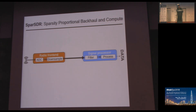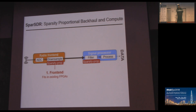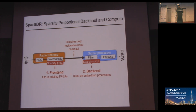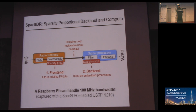This is the existing data flow of the software-defined radio, and we implement our algorithms on two ends. On the front-end, we implement a sparsity-proportional downsampling — we intelligently choose to backhaul only the existing signals. On the back-end, we process it so that we do not require too many resources. We implement the downsampling within the existing FPGAs without requiring any external hardware resources, and we downsample so much that we require only a residential-class backhaul to send the data to the signal processor. Additionally, the decoding on the other side is so lightweight that we can implement it on an embedded processor — meaning we can use just a Raspberry Pi to handle 100 megahertz of bandwidth, provided there are not too many signals in the spectrum.